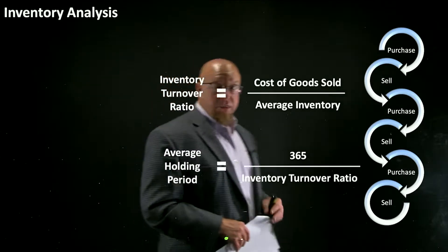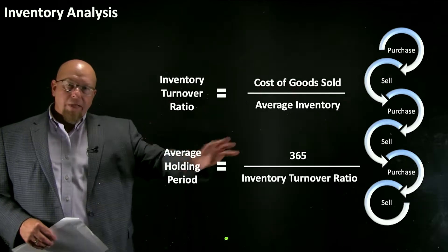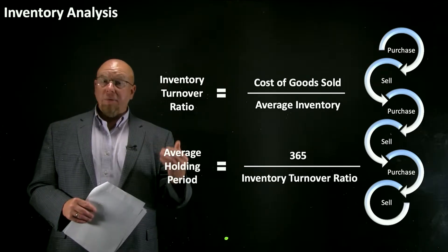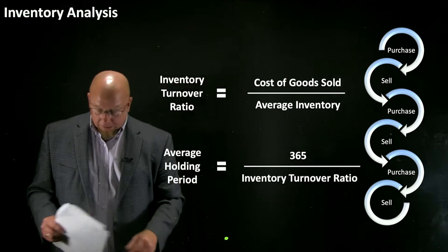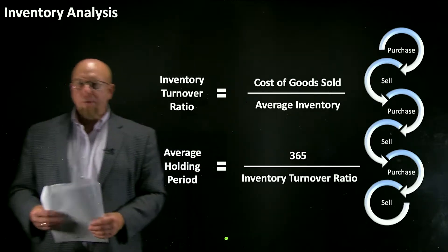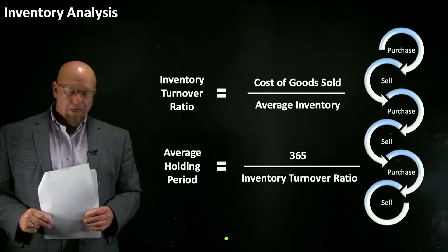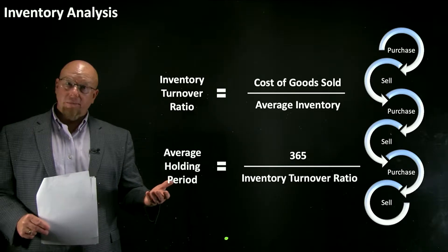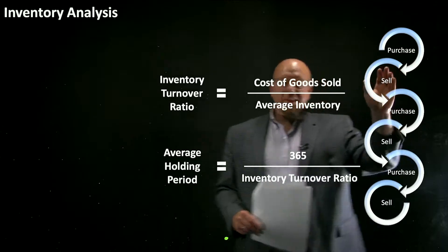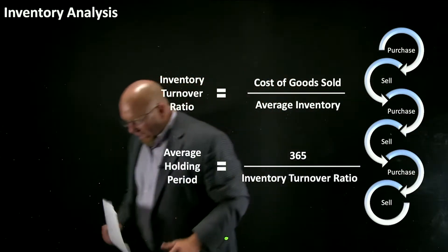One of the things we can do is inventory analysis. These are not the only metrics available for analyzing a company's inventory and inventory-related activities, but they are arguably two of the most common: the inventory turnover ratio, and what I would call the average holding period — in other words, on average how many days do you hold on to your inventory before you actually sell it to your customers. There is this cycle: companies purchase inventory, then they sell it, and they purchase some more, then they sell it.